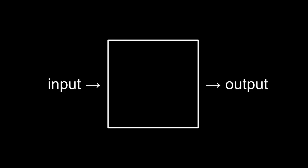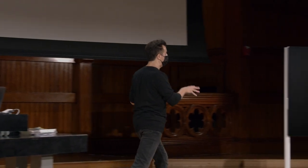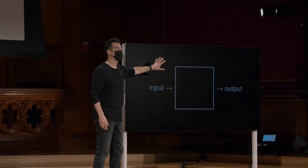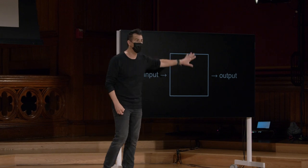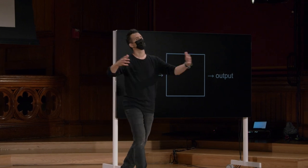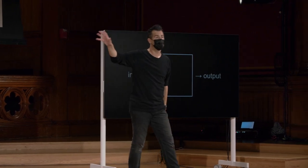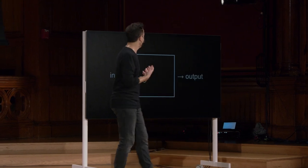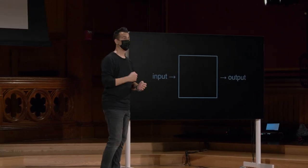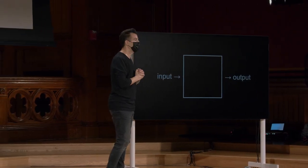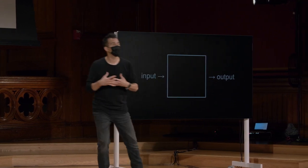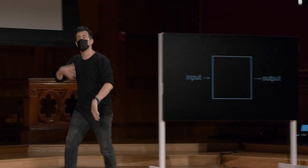Se voltarmos agora a esta primeira imagem, se tratando da ciência da computação ou realmente resolução de problemas, ouso dizer que temos maneiras mais do que suficientes agora de representar informações, entradas e saídas, desde que todos concordemos com algo e, felizmente, todos aqueles antes de nós nos deram coisas como ASCII e Unicode, sem mencionar MP4, documentos de Word e coisas assim. Mas o que há dentro dessa proverbial caixa preta na qual coisas entram e saem?